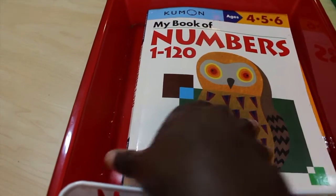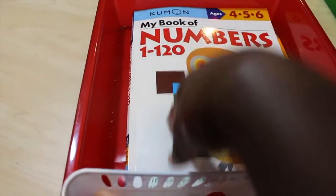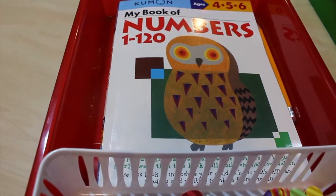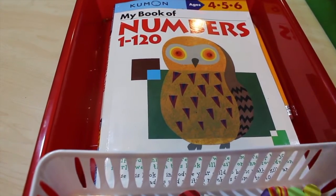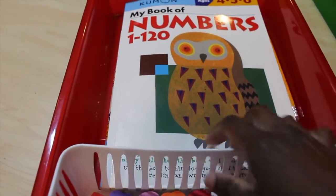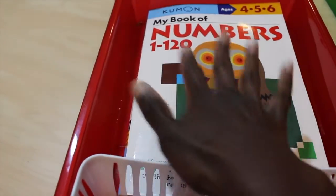And then as usual, he has his My Numbers 1 through 120 book that he does little activities, number dot to dot drawings, and writing his numbers in sequential order, what comes after, what comes before, things like that. So that's his math work box.